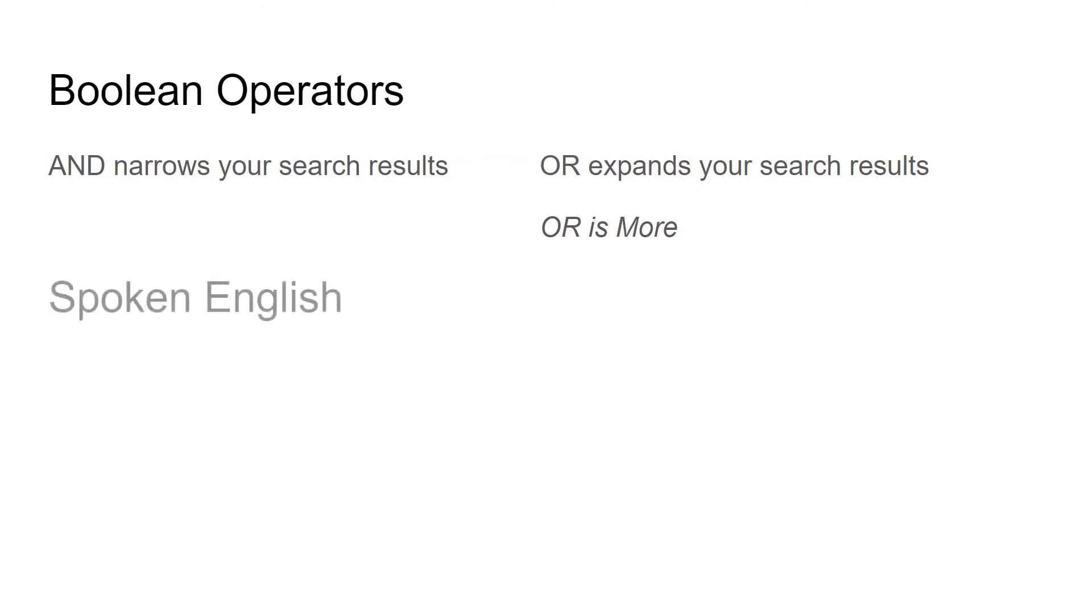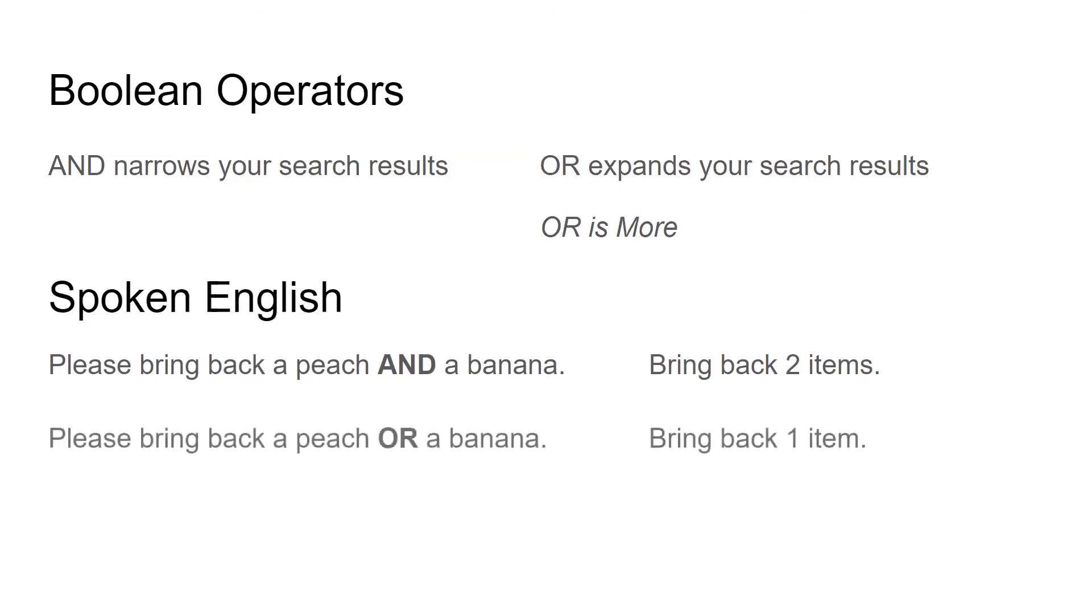We go over this because spoken English works in exactly the opposite way of Boolean operators. For example, if I said, please bring back a peach and a banana, you would bring back two items. But if I said, please bring back a peach OR a banana, you would bring back one item.